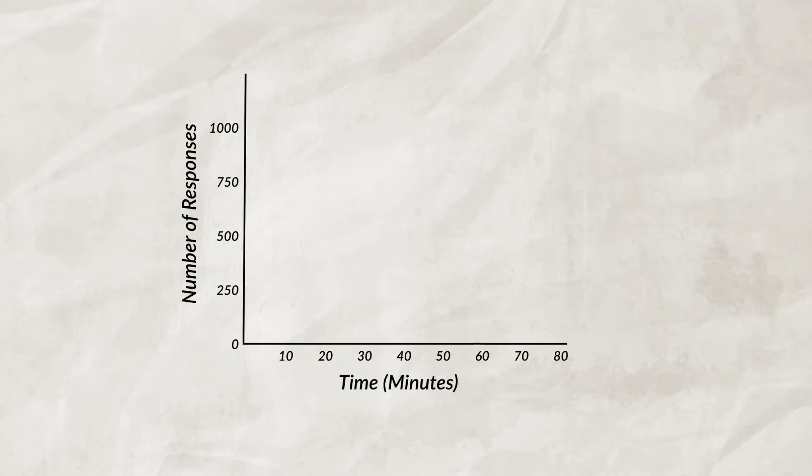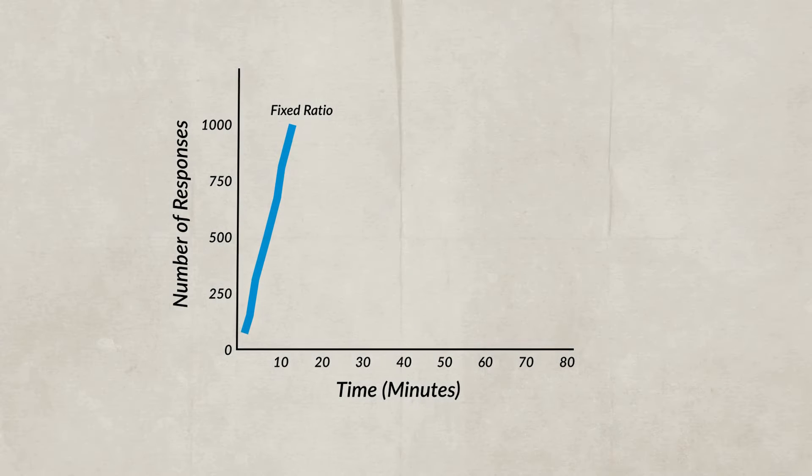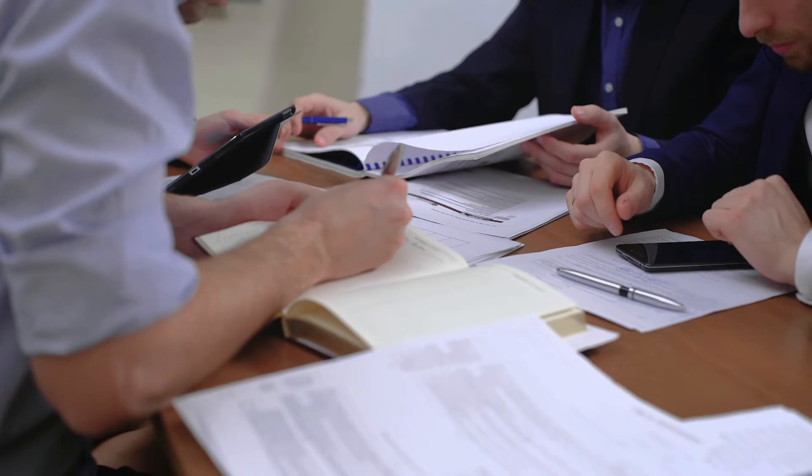The first schedule is a fixed ratio schedule, which reinforces a response after a set number of responses. For example, a punch card from a restaurant where you get a free dessert after a certain number of purchases is a fixed ratio schedule. It's great at getting a high number of responses in a short amount of time. In the workplace, a company could say 'for every 10 sales you get, you'll receive $100,' motivating employees to quickly sell more product.